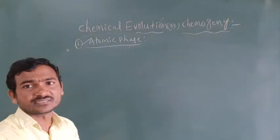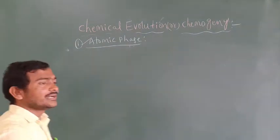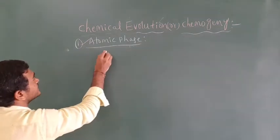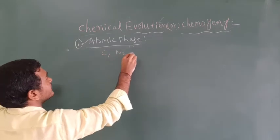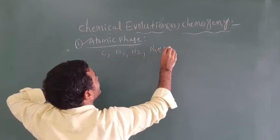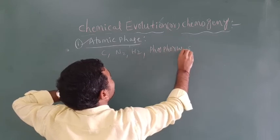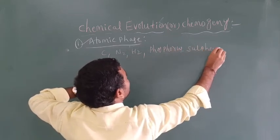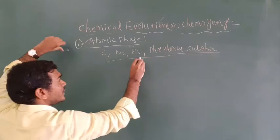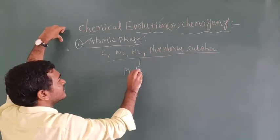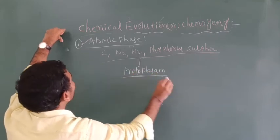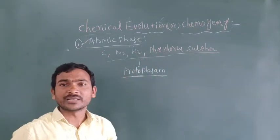The first step is the atomic phase. In the atomic phase, the early earth had the following atoms: carbon, nitrogen, hydrogen, phosphorus, and sulfur, etc. These atoms are helpful to the formation of protoplasm, which contains all the molecules. This completes the first step.